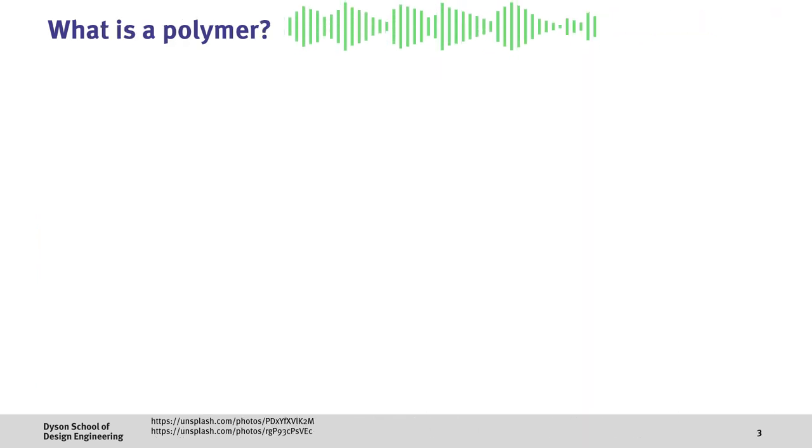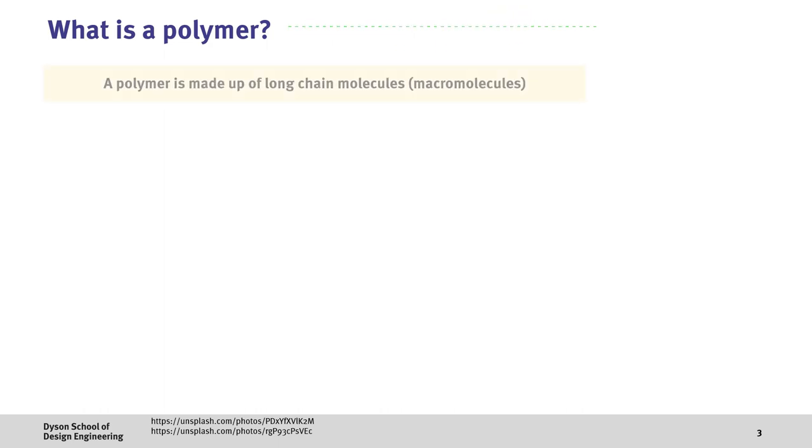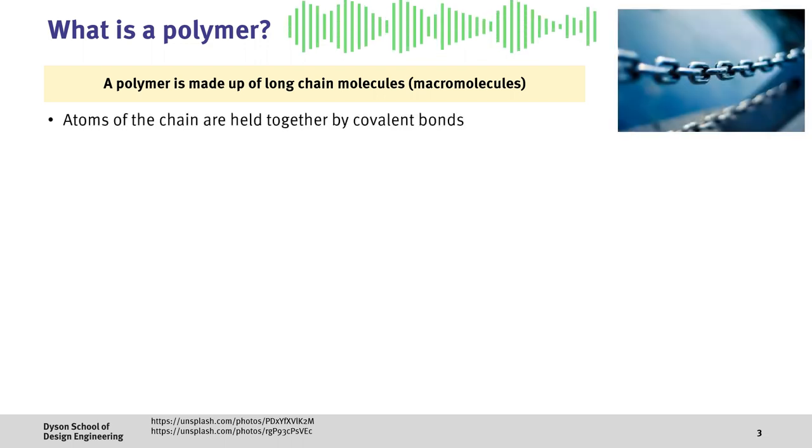Now, let's have a look at what a polymer actually is. Here, we can define a polymer as being a material made up of long chain molecules or macromolecules. These chains are made up of atoms which are held together by covalent bonds and can be visualized in a similar way to a metal chain.